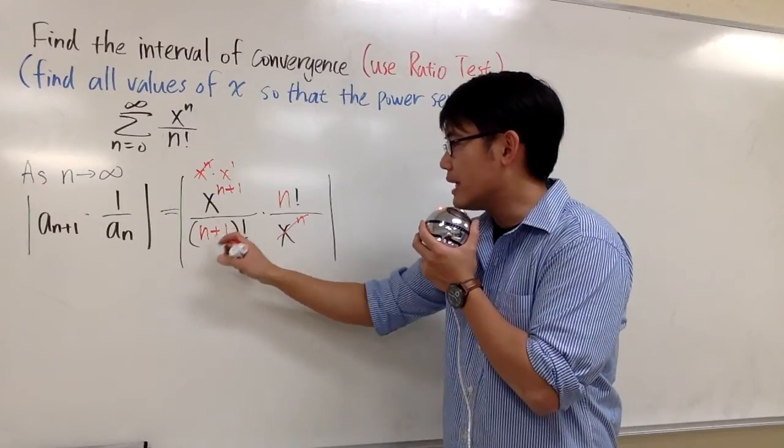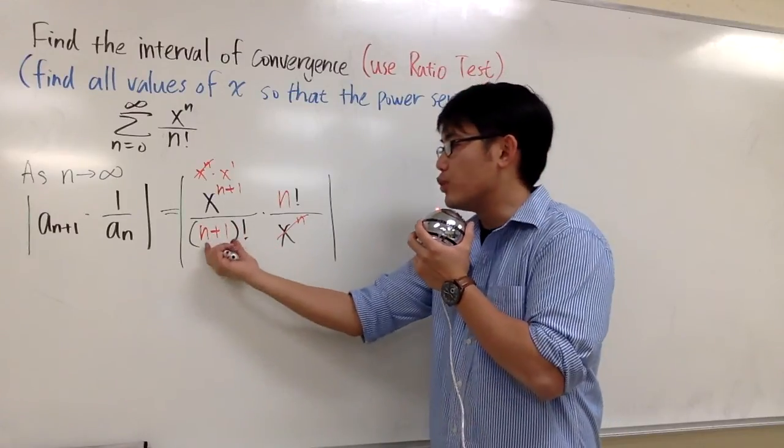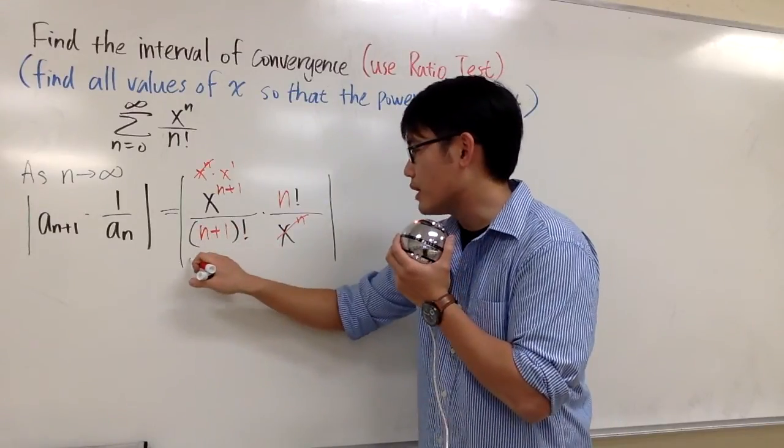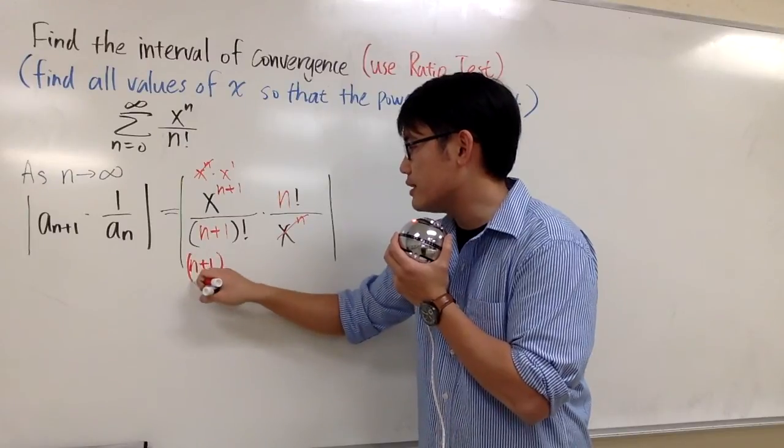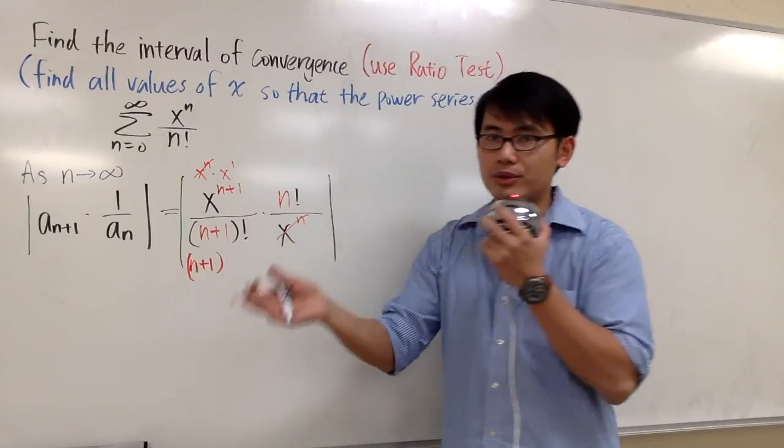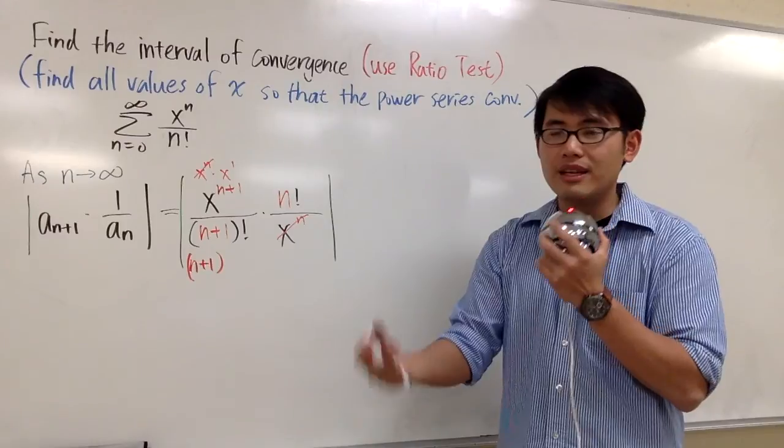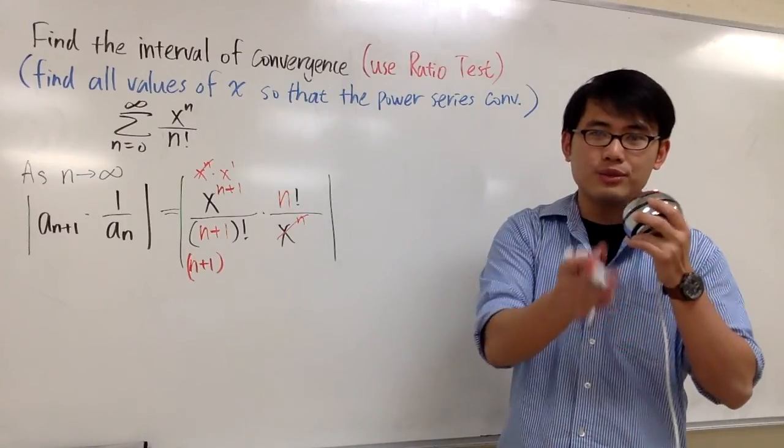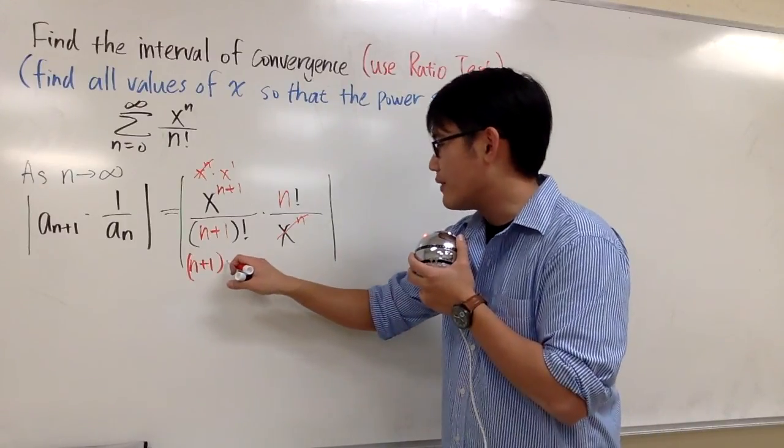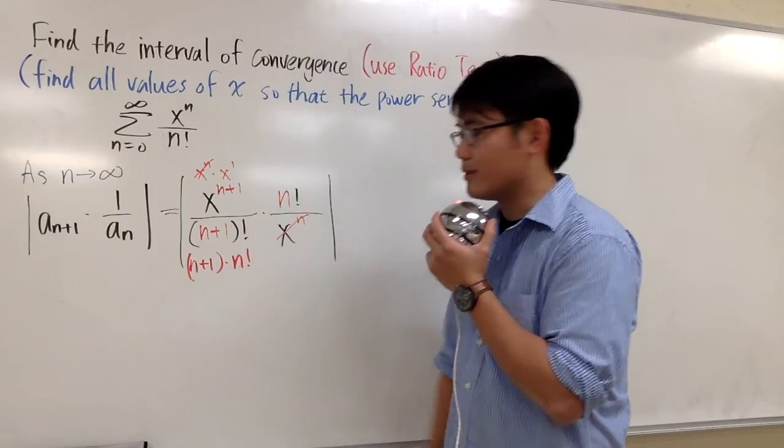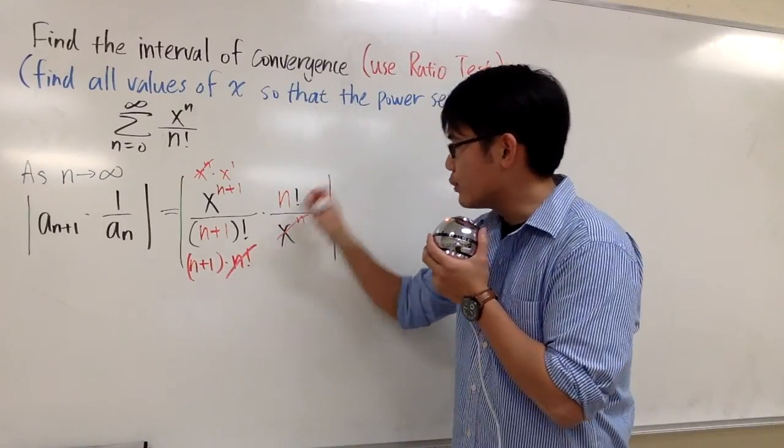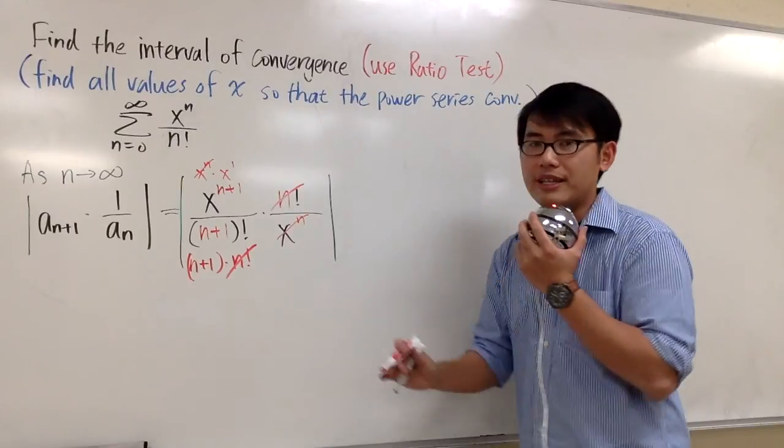On the bottom, when we have n+1 factorial, what we do is, we put down the inside first, the n+1, and in the parentheses. And then the next one is, you know, just subtract once we have n, and then n-1, n-2, and so on. Namely, we will have multiplied by n factorial. And this n factorial can be cancelled with that n factorial. So that's very nice.